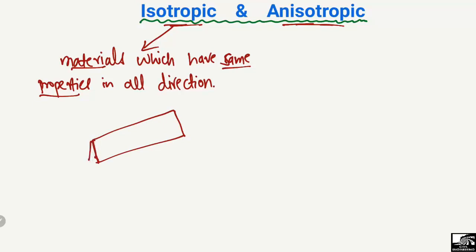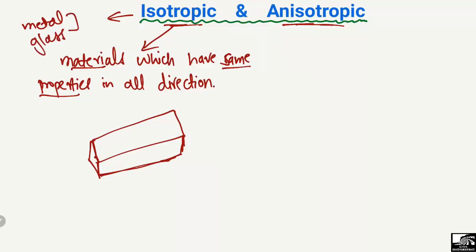Examples of isotropic materials are mostly metals and glass. For example, a steel bar is also categorized as a metal. So metal and glass are the two main examples of isotropic materials, because their properties are the same in all directions.